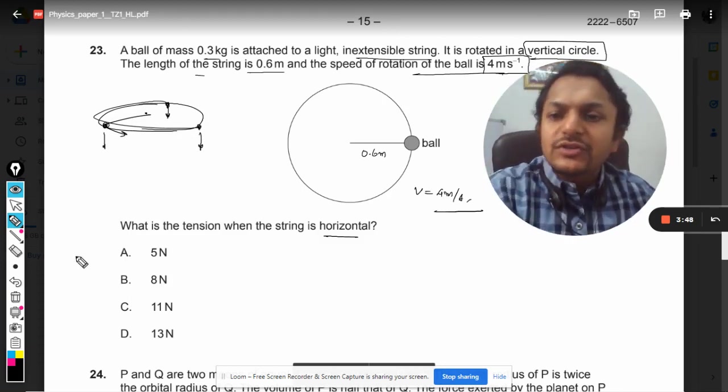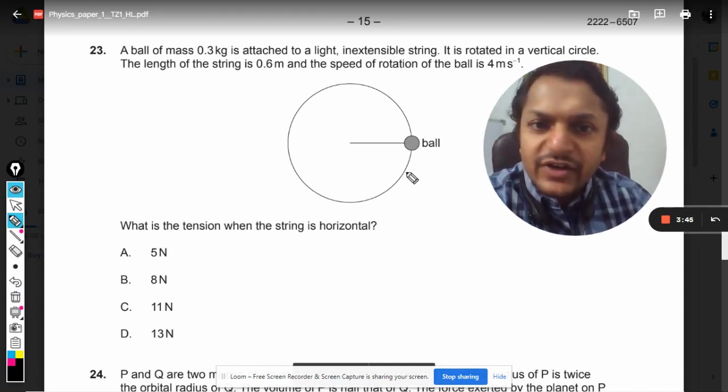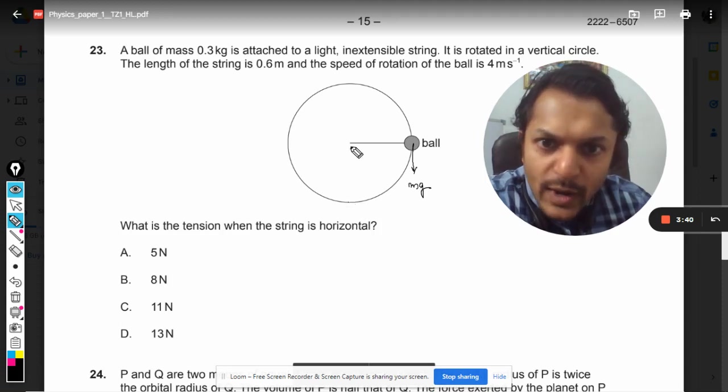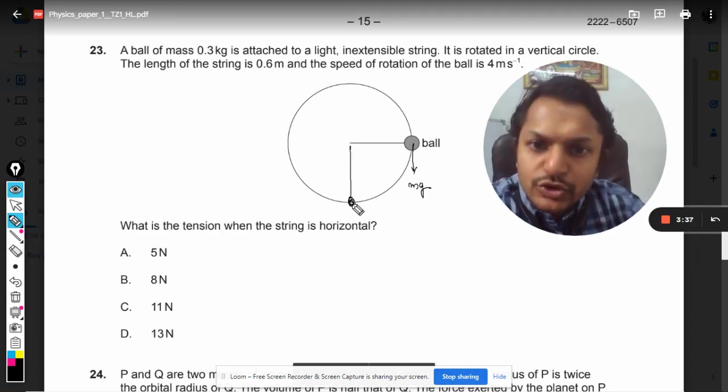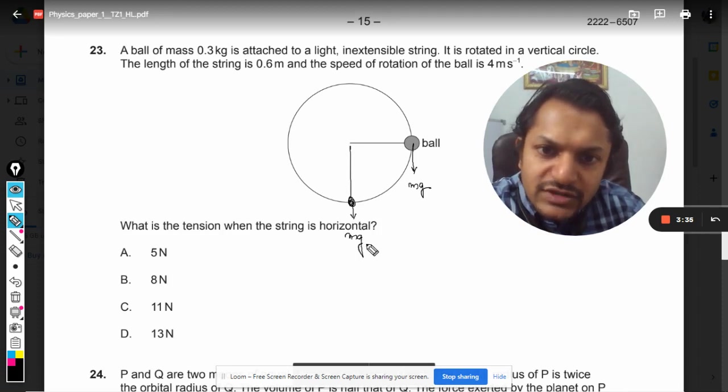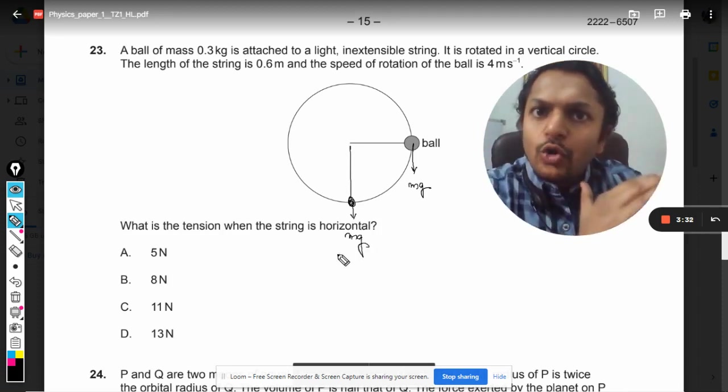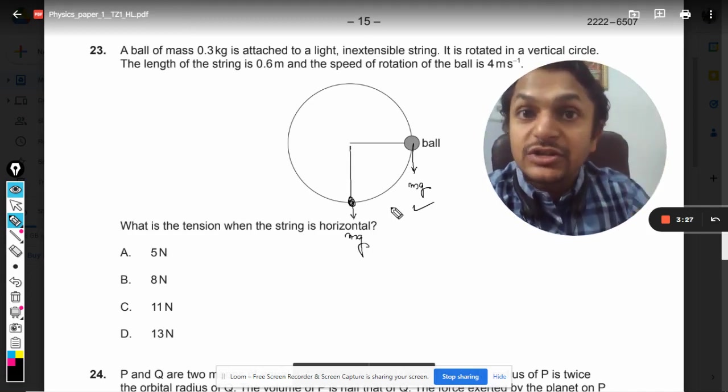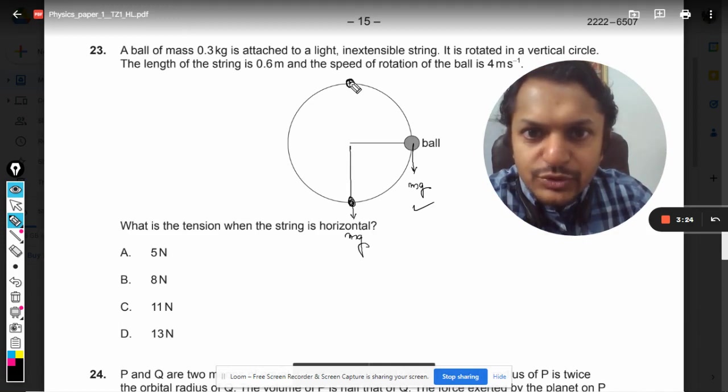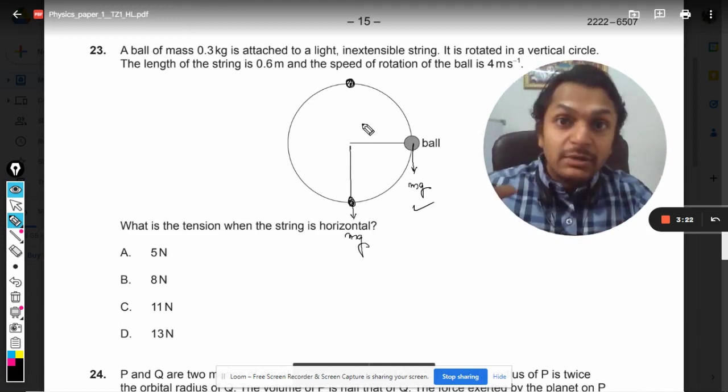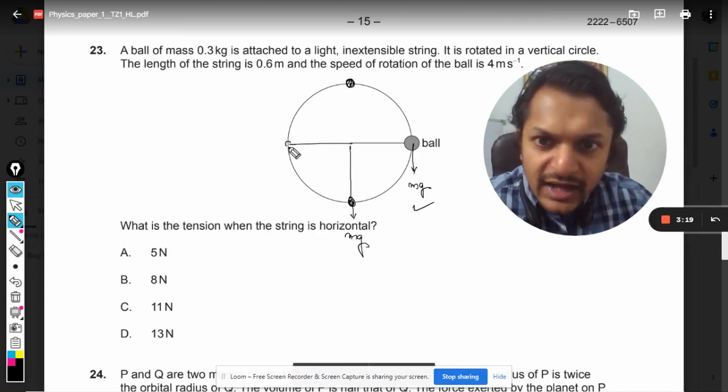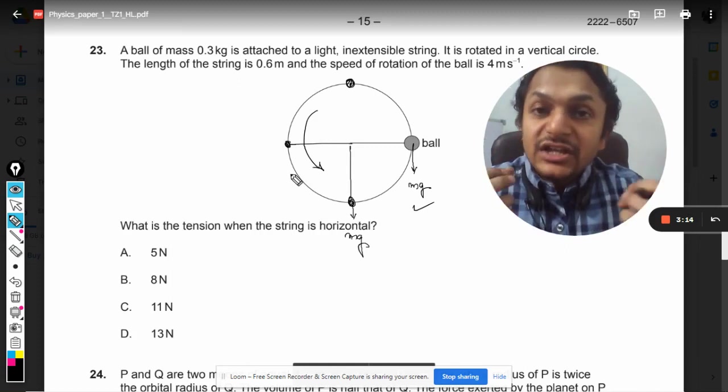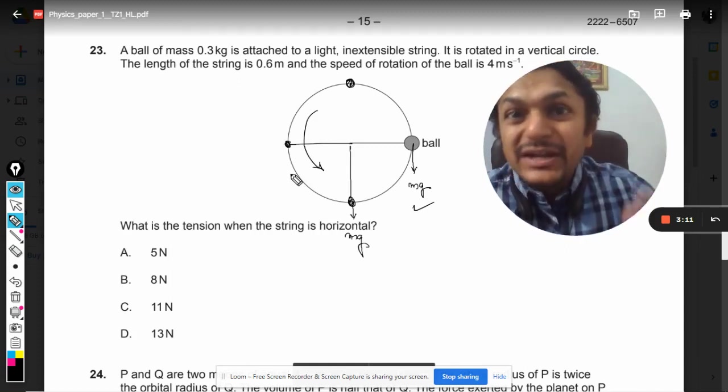But when it comes to the vertical circle, things become different. The weight is acting downwards, so when the body is at the bottommost position, the weight is downwards. When the ball tries to go up, the weight acts against the motion and tries to reduce the velocity. When it reaches the topmost position, the velocity becomes minimum. When it starts falling, gravity facilitates the motion, increasing the speed of the bob.